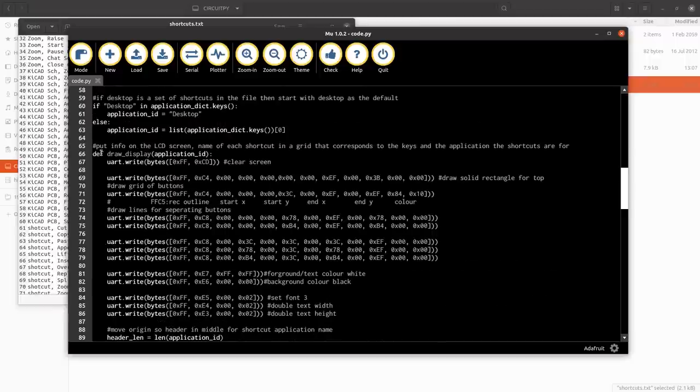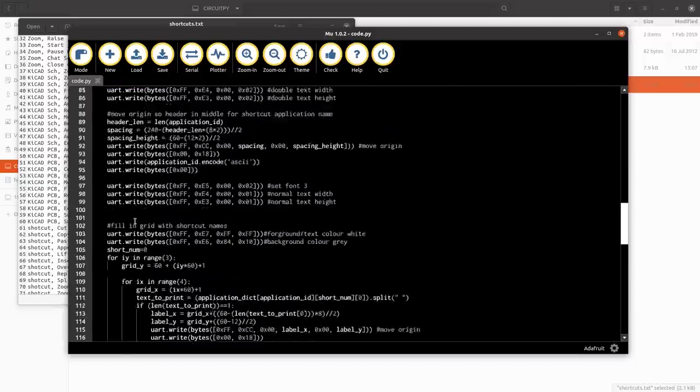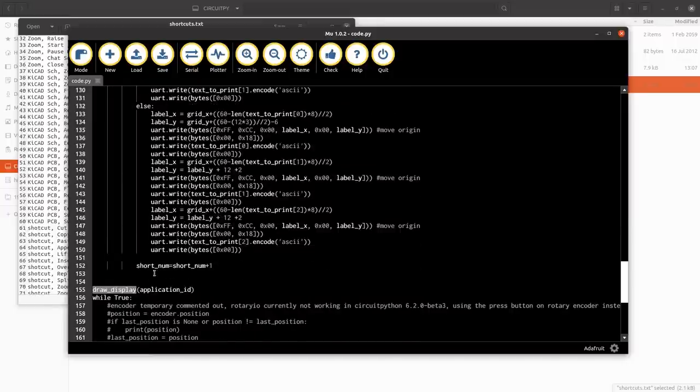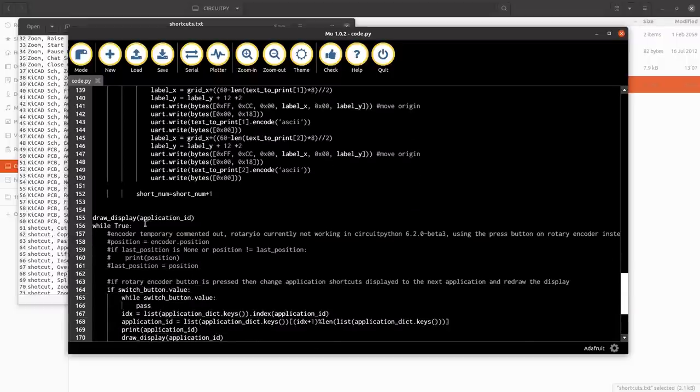I'm then setting this up. So I've got the draw display which can be run, which will draw the display with the grid that I want for the keys. So this all goes through, sets up lines, grids and changes all that. And then it will run it with application ID, which at this stage will be the default or whichever's the first one from the text file.